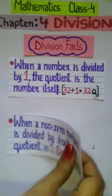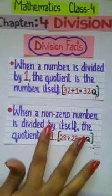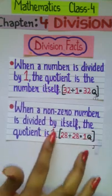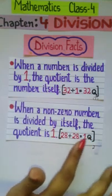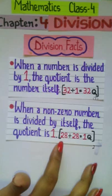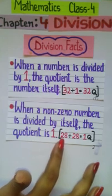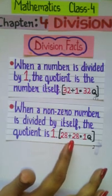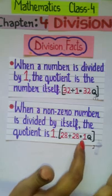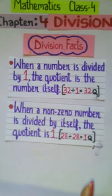Next, when a non-zero number is divided by itself, the quotient is 1. For example, 28 divided by 28, the result obtained is 1. That is the quotient.